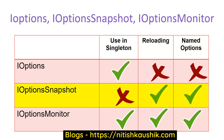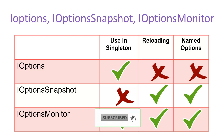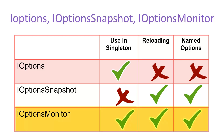Then we have iOptions Snapshot. iOptions Snapshot works as a scoped service, so it is not applicable for the singleton. But it works for reloading and for the named options. Remember, you cannot use iOptions Snapshot inside a singleton service because using a scoped service inside singleton is not allowed.